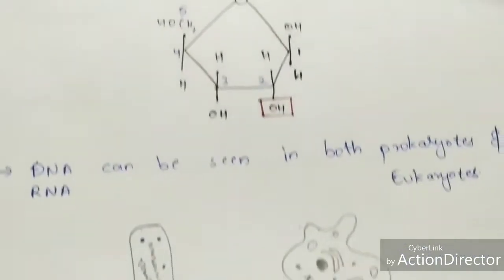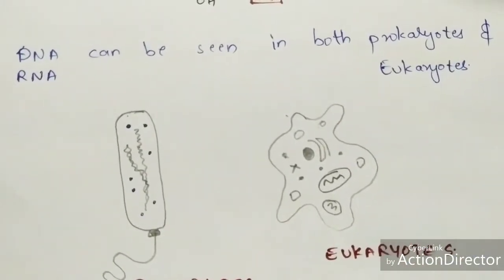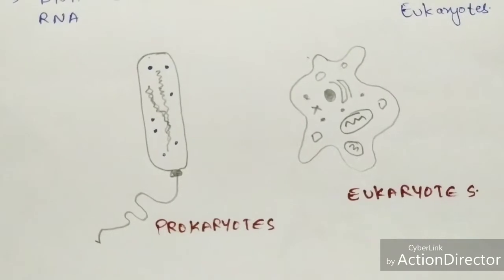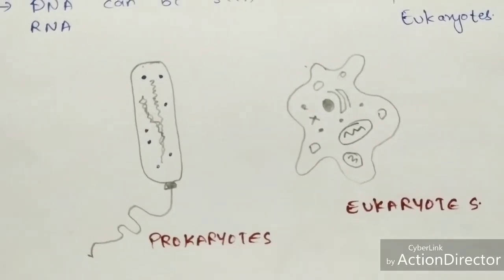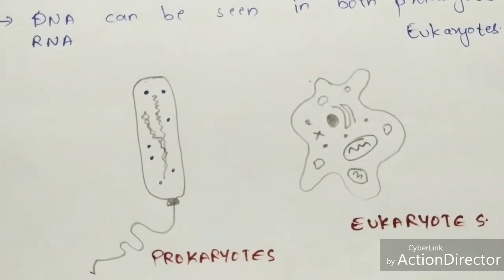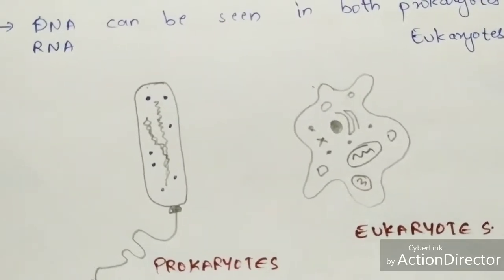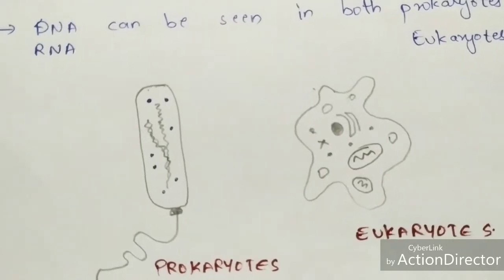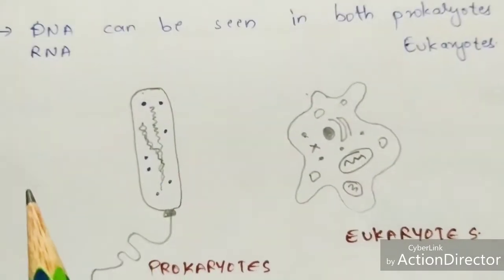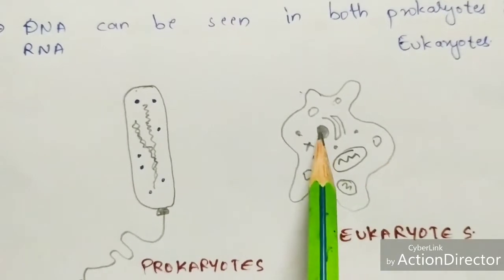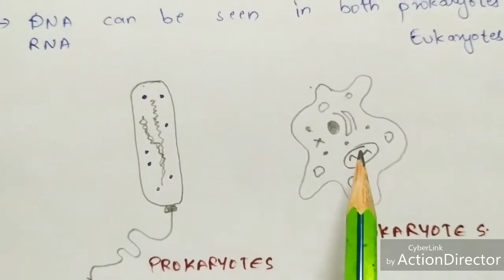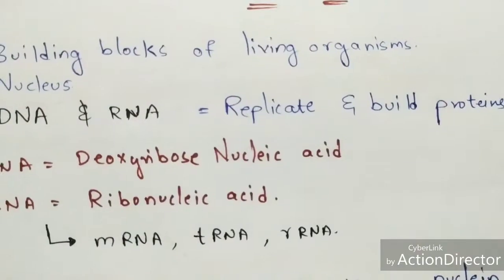DNA and RNA can be seen in both prokaryotes and eukaryotes. In prokaryotes, the nucleus is absent, so nucleic acid is present in the cytoplasm and covers the whole cell. In eukaryotes, nucleic acid is present in the nucleus, and recent research also shows it is present in mitochondria and chloroplasts.